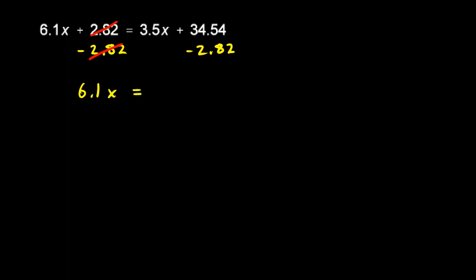Then on the right, I still have this 3.5x, but now I have 34.54 minus 2.82. Let me figure that out. 34.54 minus 2.82.